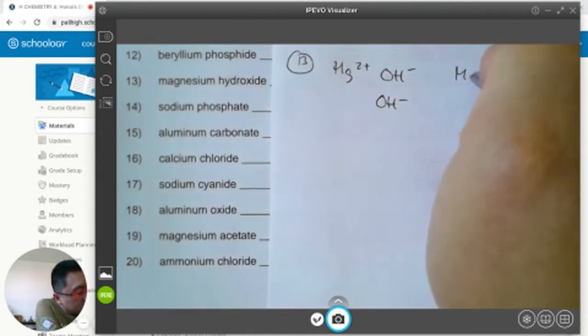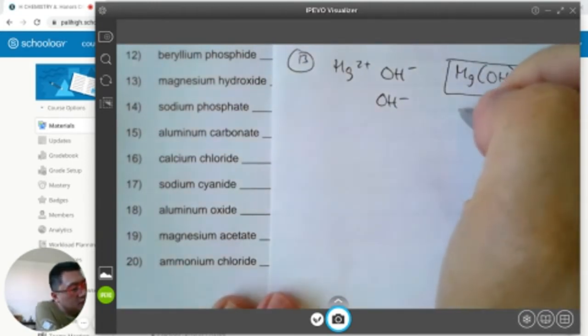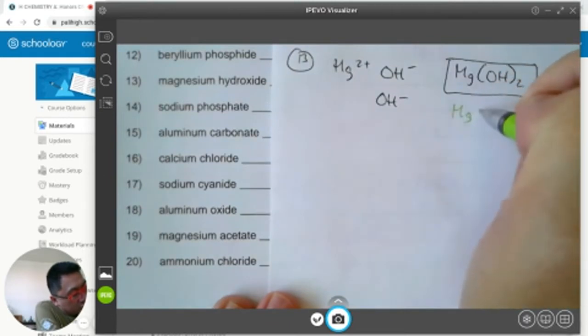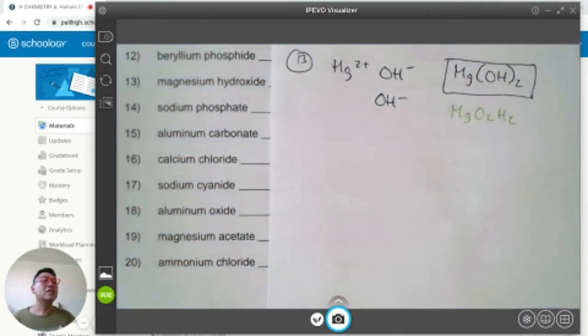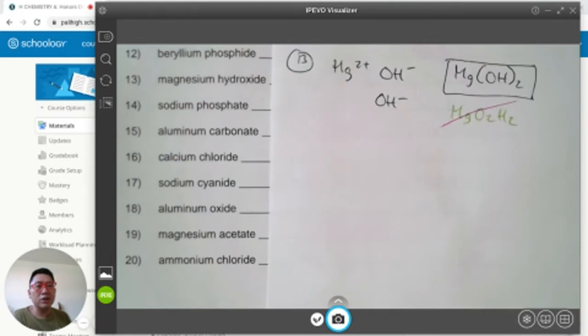The formula of magnesium hydroxide is Mg(OH) taken twice. That's usually how we write it, Mg(OH)2. Isn't this the same as MgO2H2? Technically yes, but don't write it this way.